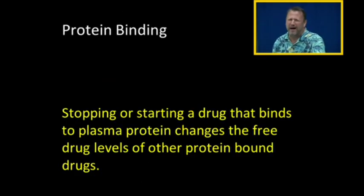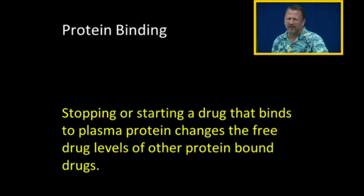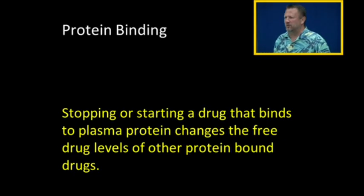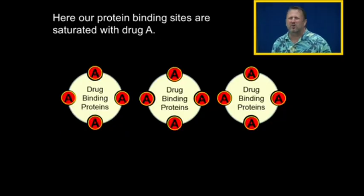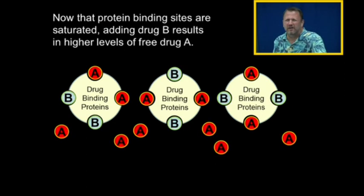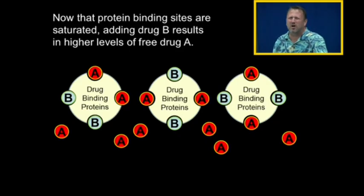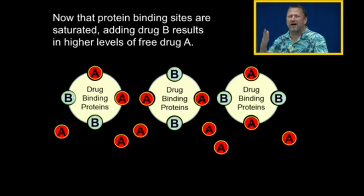Many important drugs out there are highly protein bound. When we start or stop one drug that's highly protein bound, it changes the free drug levels of all the other protein bound drugs. Here our protein binding sites are completely saturated with Drug A. If I add Drug B, which is even more highly protein bound, it kicks the drugs off the protein binding sites, and so now I have free Drug A simply by adding Drug B.